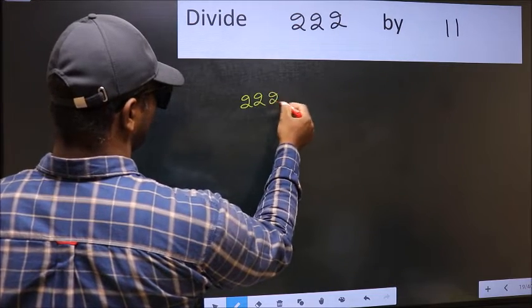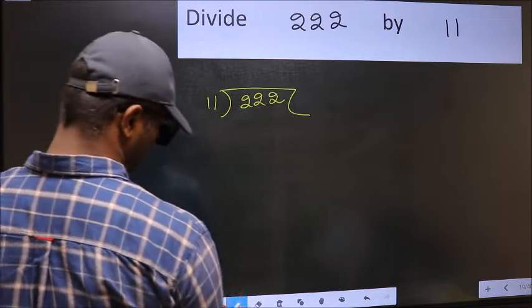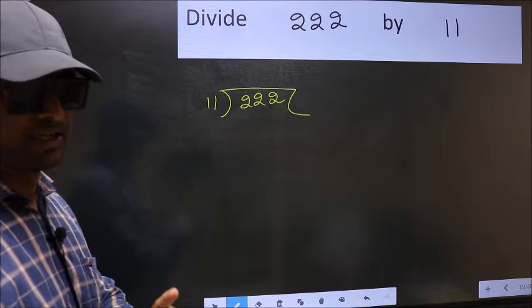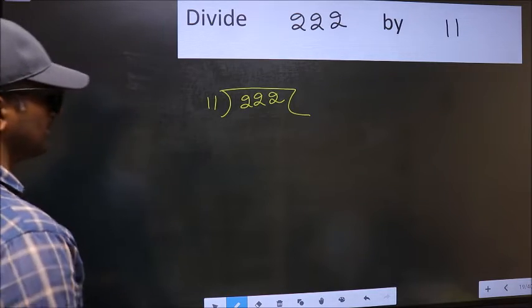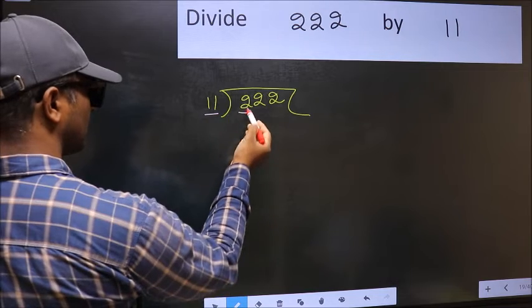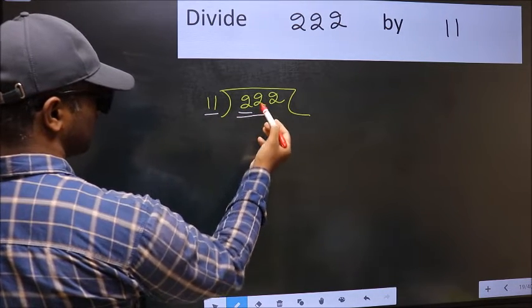222 and 11 here. This is your step 1. Next, here we have 2 and here 11. 2 is smaller than 11. So, we should take two numbers, 22.